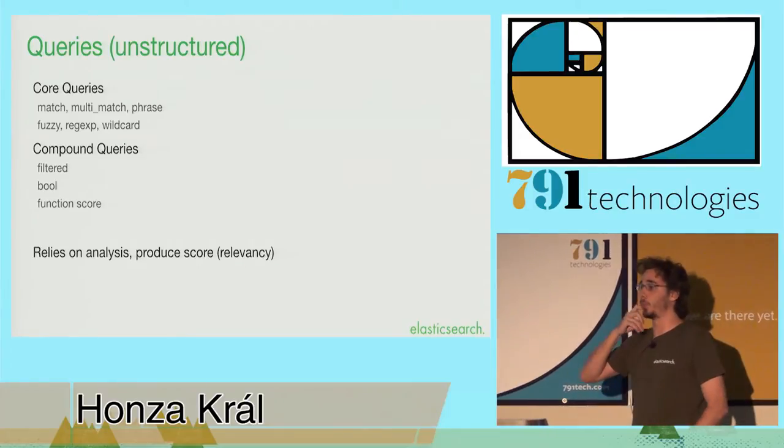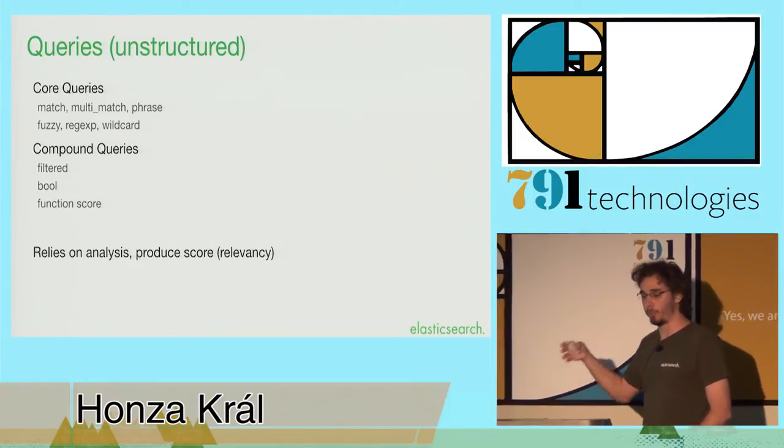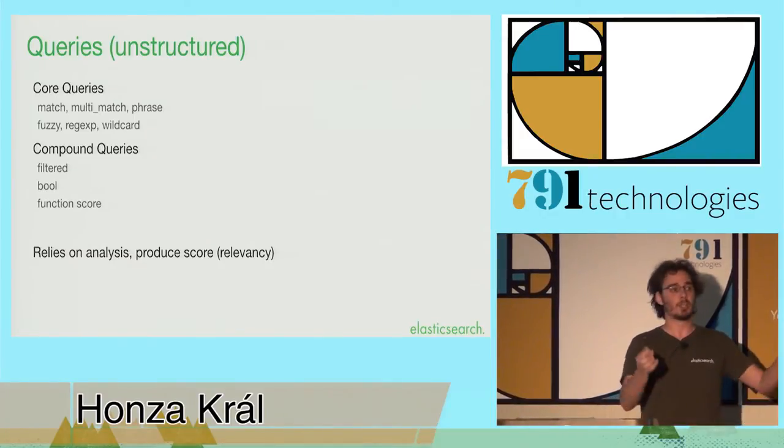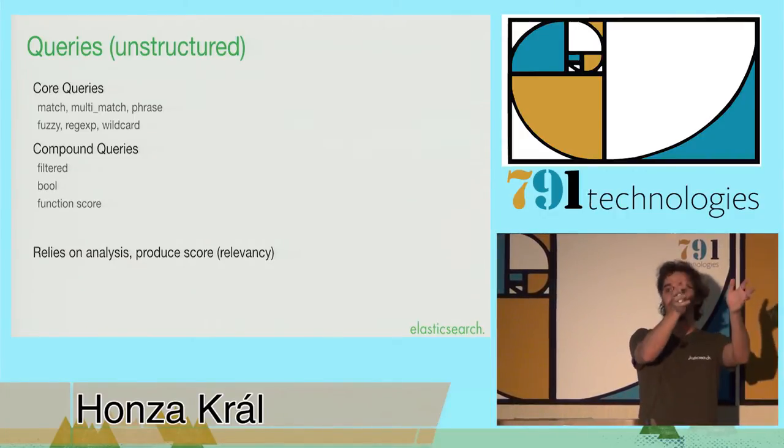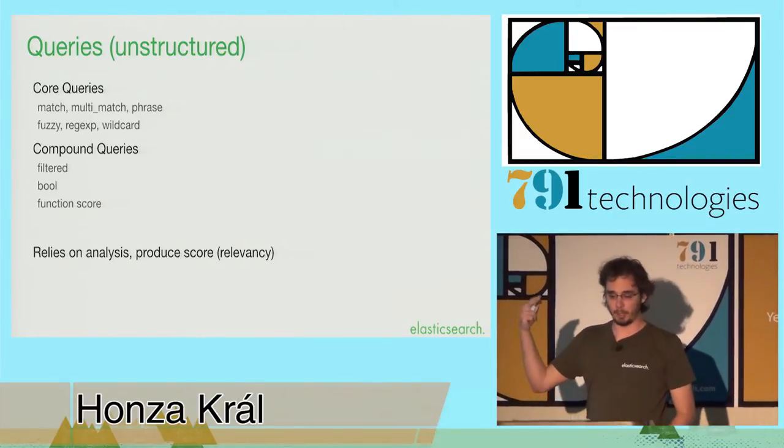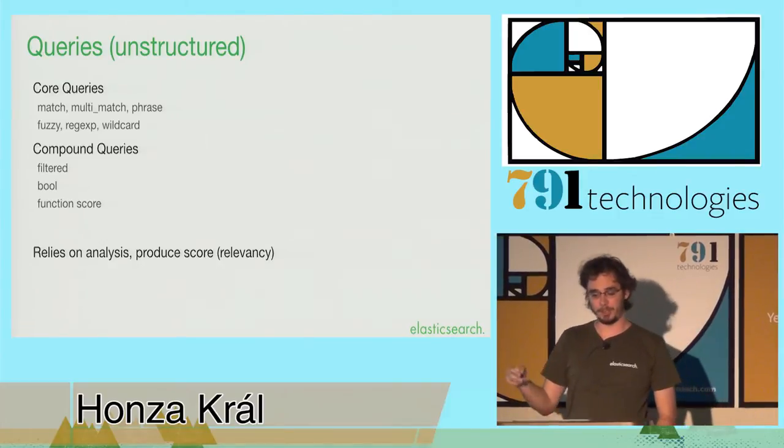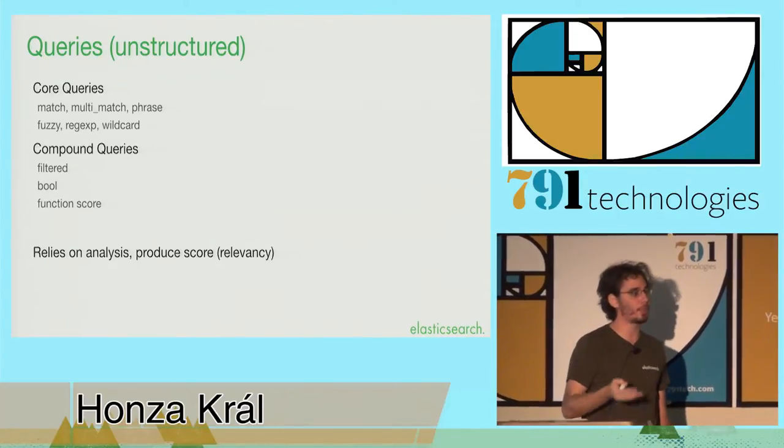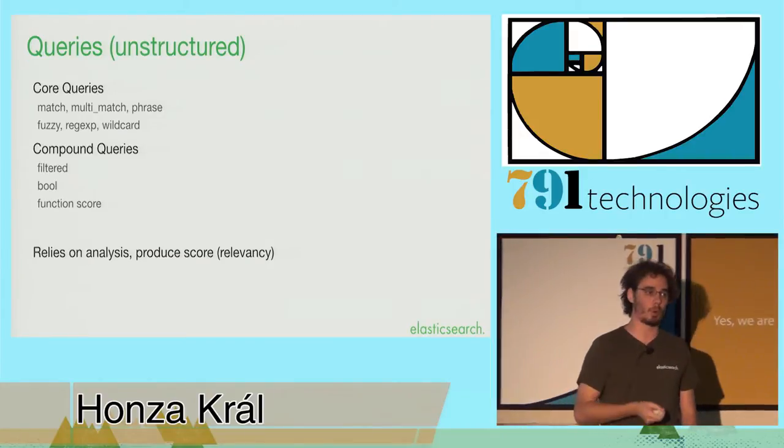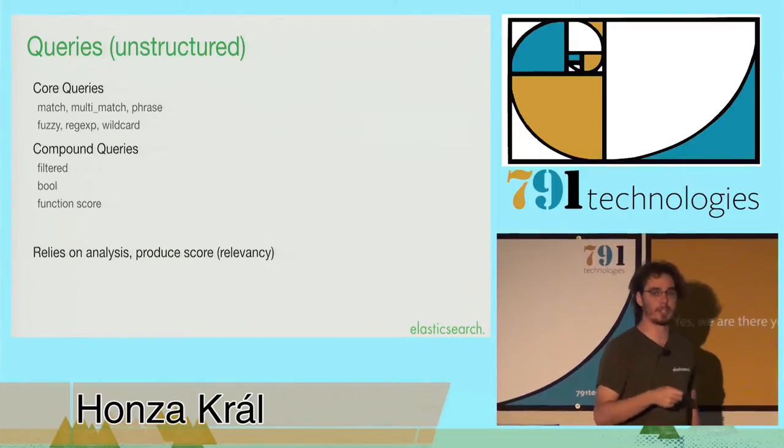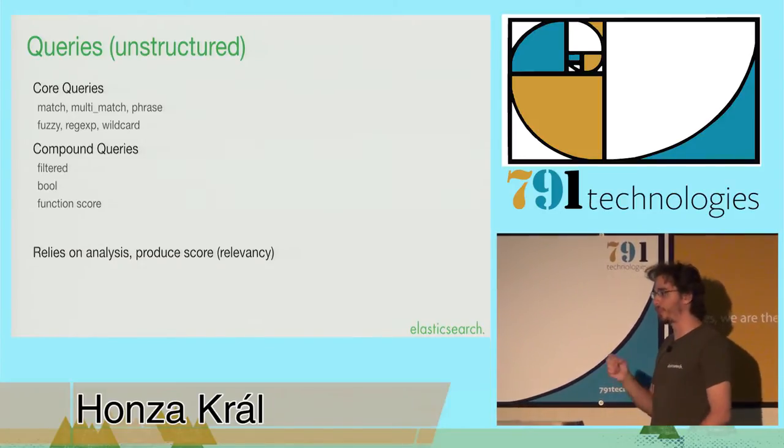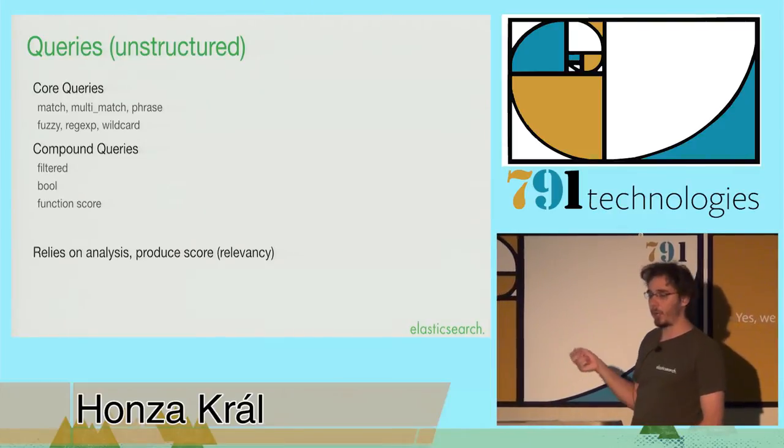So if you have multiple of those core queries, you can put them together. Typically, you do that using a bool query, which is short for boolean, which essentially just takes a bunch of other queries together and says, you must have all of these, some of these, and none of these. Again, we'll see an example. There are queries and there are compound queries. The queries rely heavily on analysis, which I talked a lot about yesterday, and they produce score, and because the score is dependent on the actual form of the query and on the state of the index, these queries are not cached.